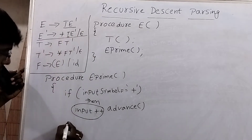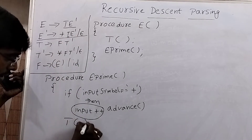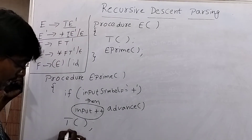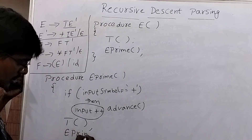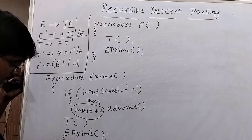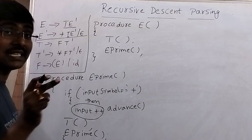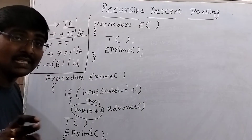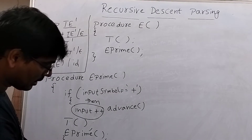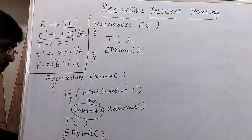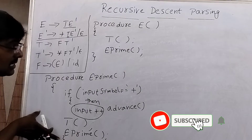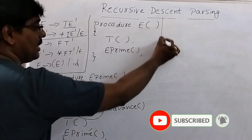After matching the plus terminal and advancing, next comes a non-terminal — call T(). Then call E_prime(). This entire block comes under the if case. Else — that is, if there is no match — return. An empty return is performed. This is the complete procedure for E'.